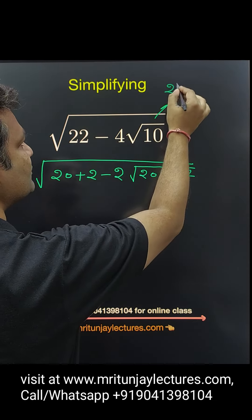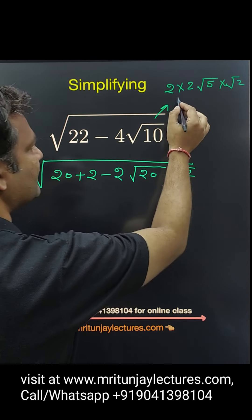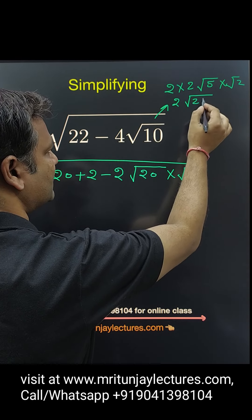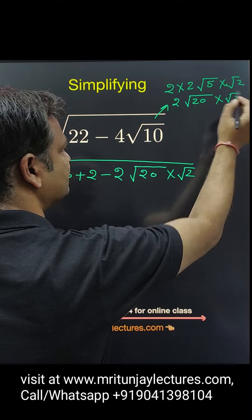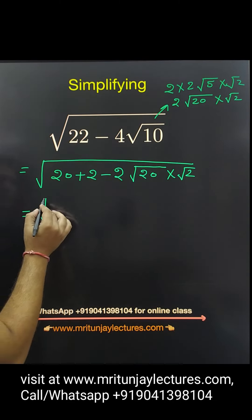OK, after that that one written 20. So this one written root 20 square, root 2 square, root 20 into root 2.